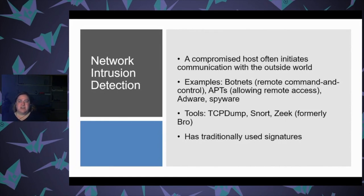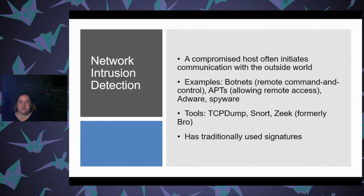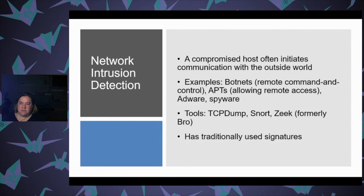Network intrusion has typically used signatures in the past. Snort is a fairly simple rule-based engine. Bro/Zeek offers deep packet inspection, which can generate a whole lot of features for anomaly detection — for example, you might be able to detect pivoting, and it offers geolocation and more detailed information about networks like ASN.